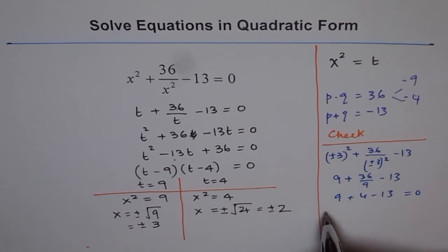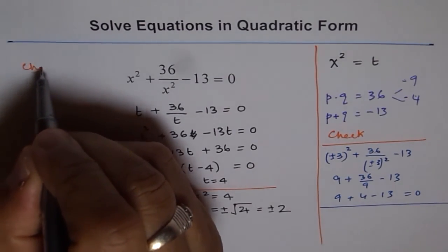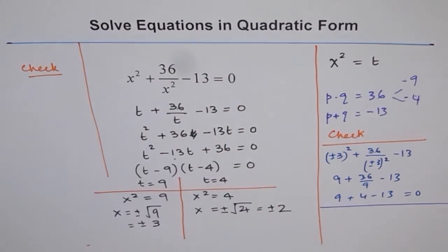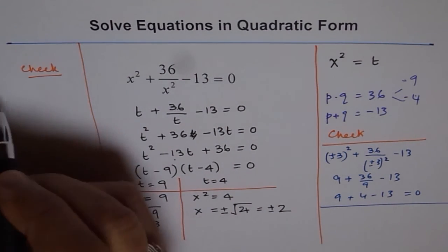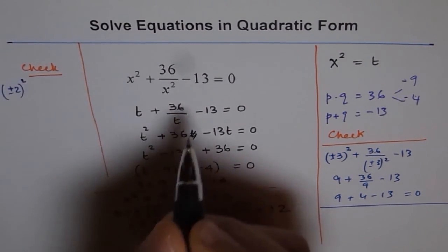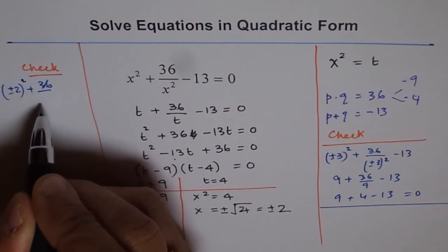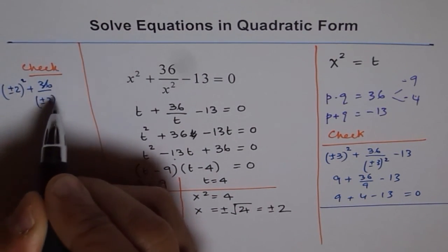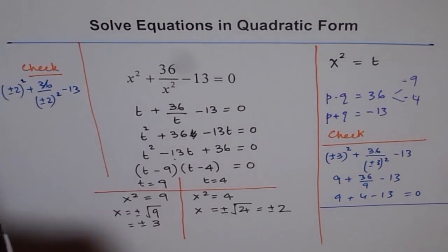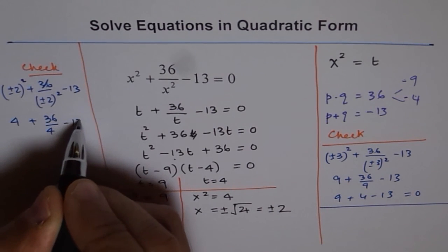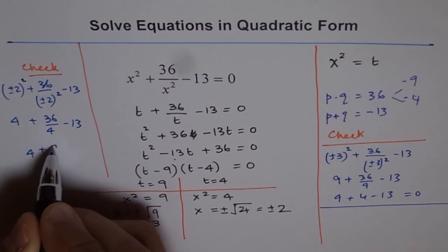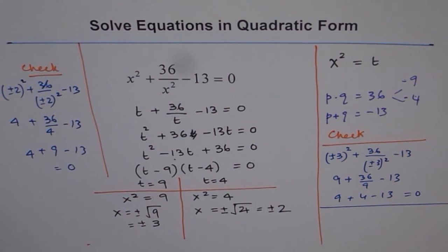Similarly, we can check for plus and minus 2. So, if you write plus and minus 2 squared, you get 4. So, let's check it on this side. If I write plus and minus 2 for x, I get plus and minus 2 squared plus 36 over plus and minus 2 squared minus 13. So, plus and minus 2 squared is 4 plus 36 over 4 minus 13. 4 plus 9 minus 13, which is equal to 0. So, it works.